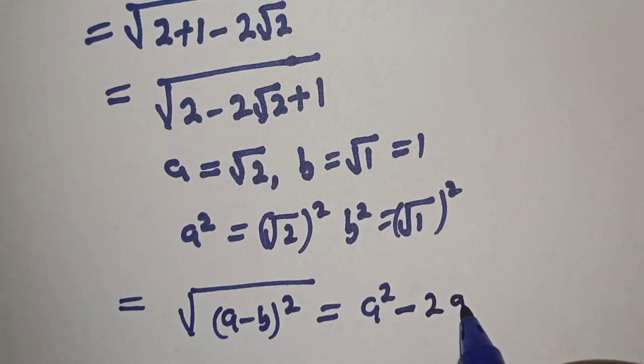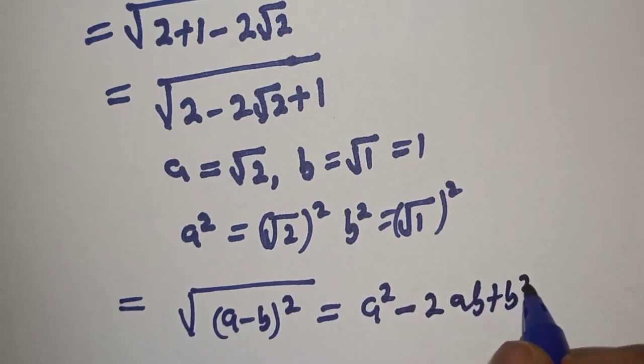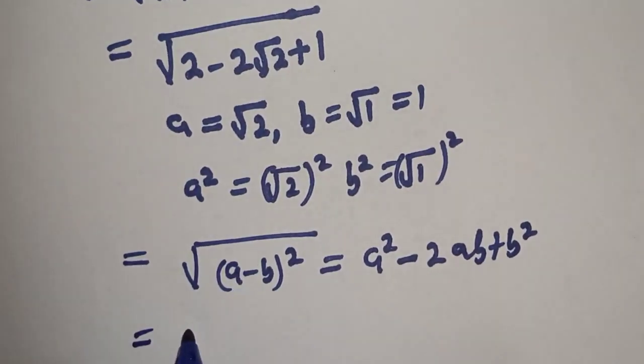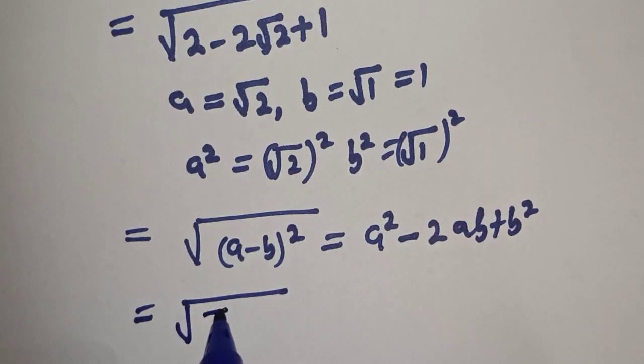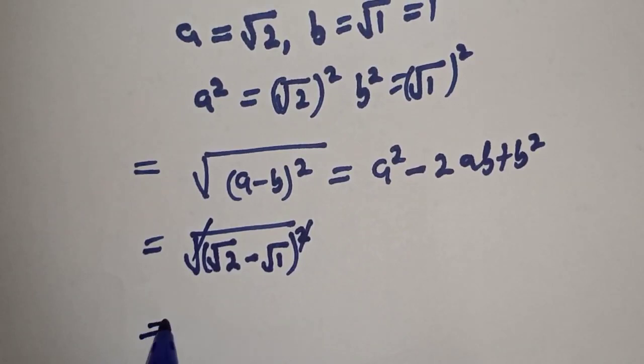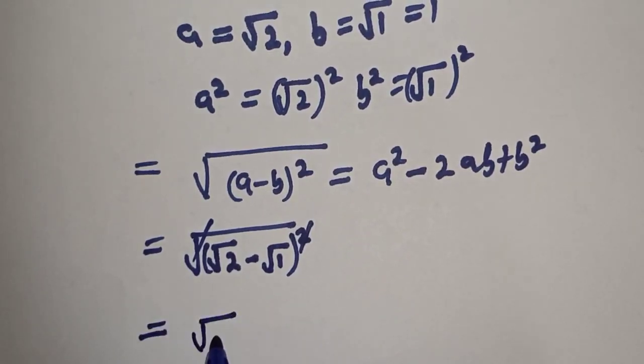Now this is equal to, what is our a? √2. What is our b? √1. So √((√2 - √1)²). This will cancel, equal to √2 - √1.